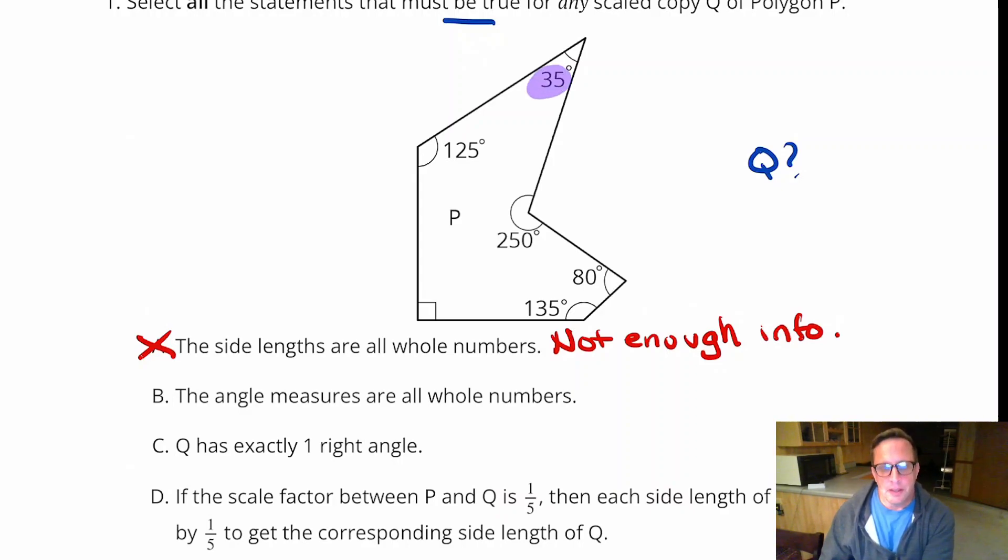And so it looks like every one of these angles is a whole number. 35 is a whole number. That's a whole number, 125. That's 250. That's 80. That's 135. And then there's no number here, but this is a sign for 90 degrees, which is a whole number. So that is true right there.